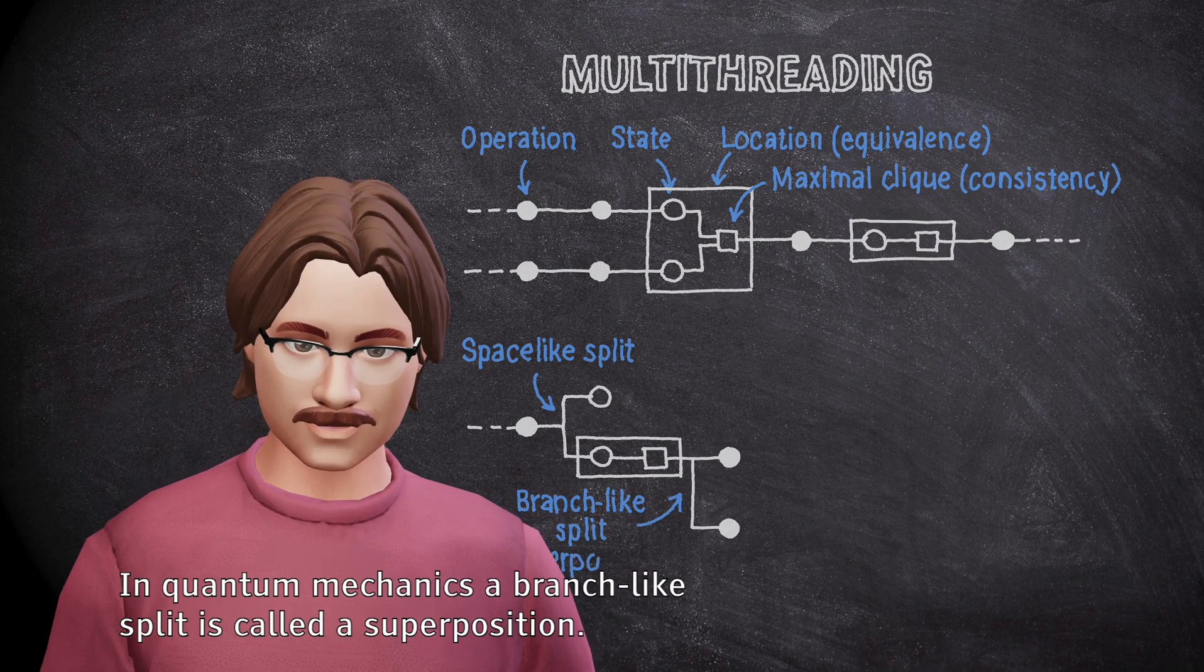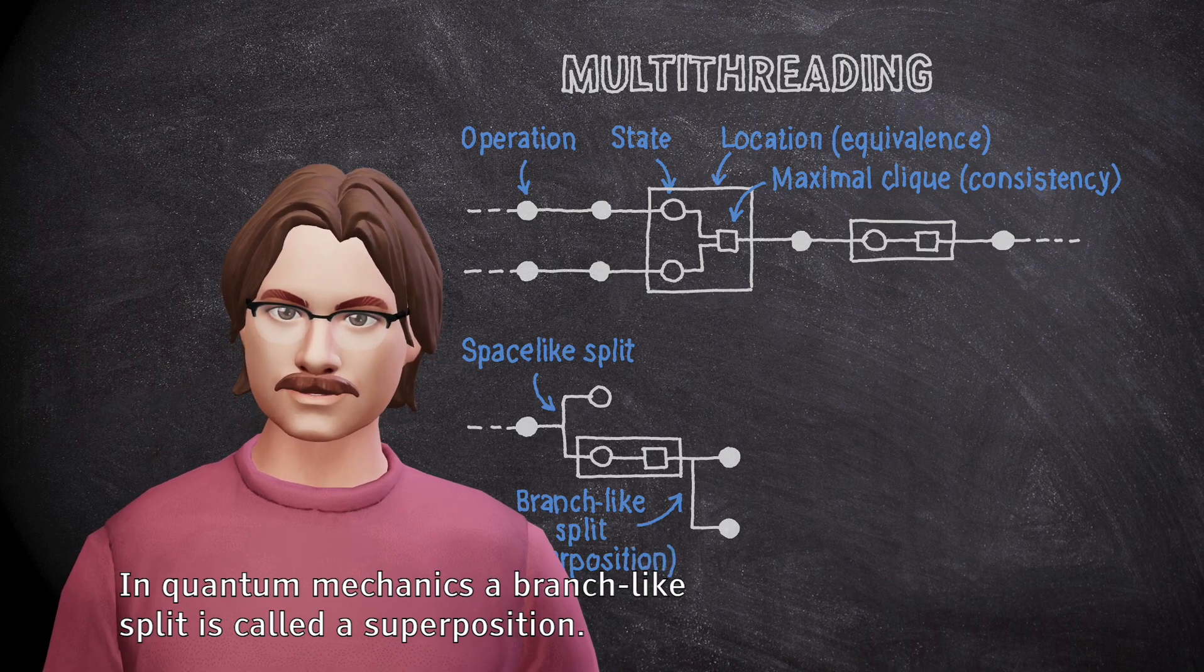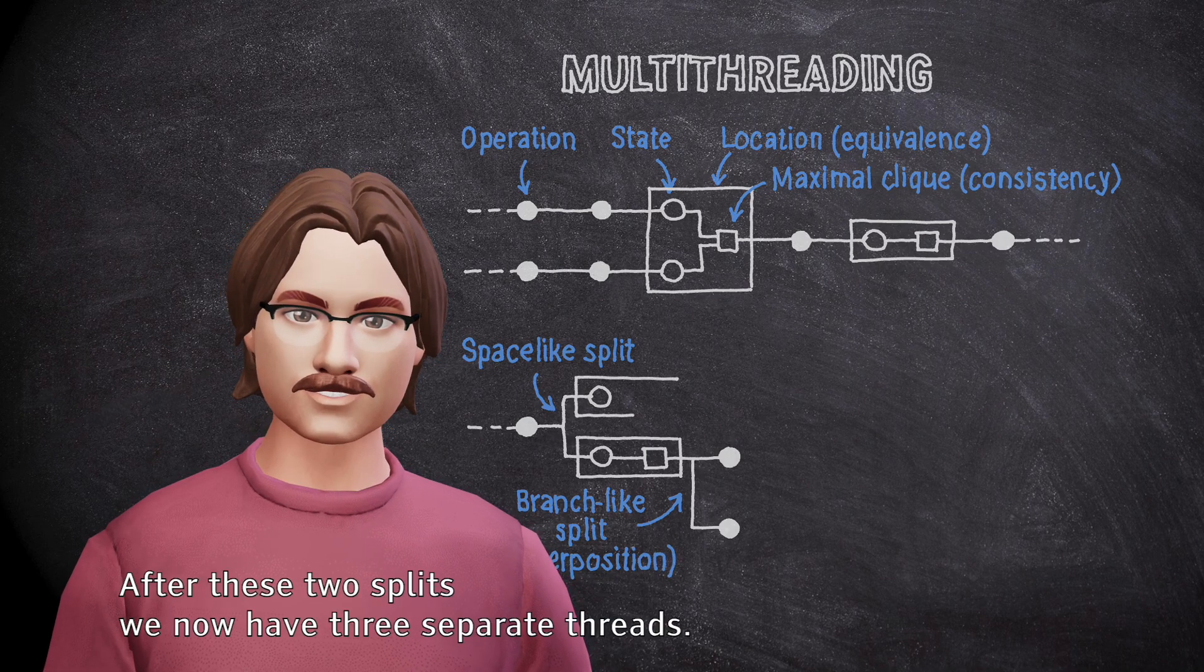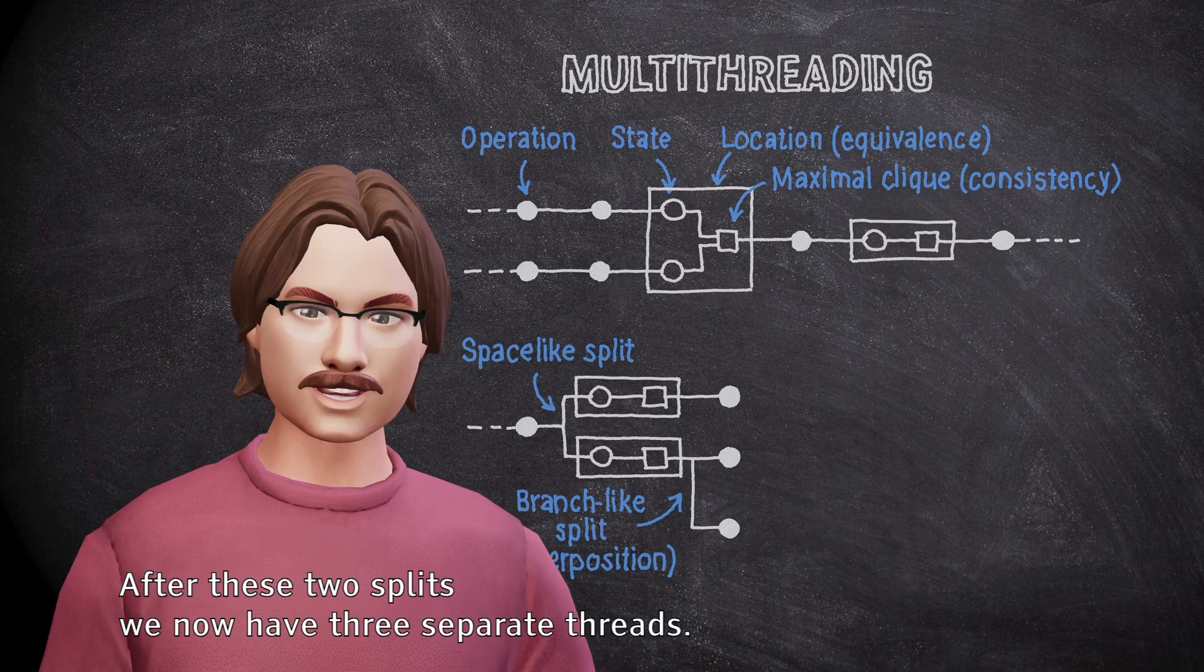In quantum mechanics, a branch-like split is called a superposition. After these two splits we now have three separate threads.